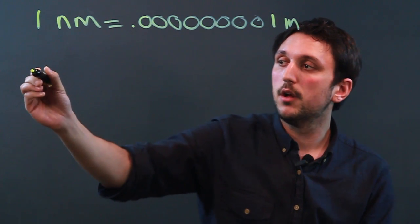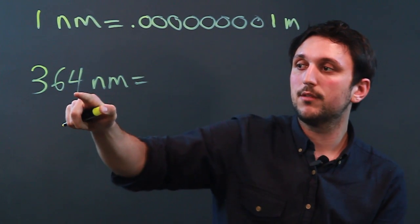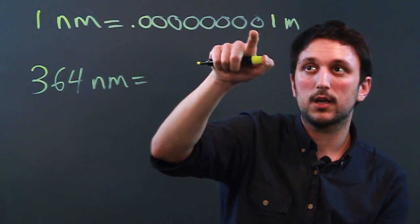So let's say you have 364 nanometers. Well, what we're going to do is the four would go here, the six and the three.